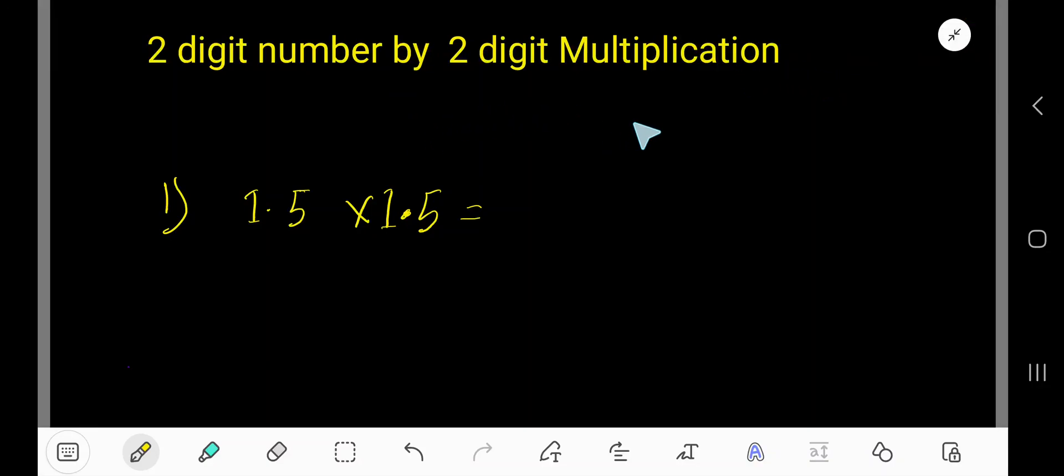Multiply two digit by two digit number with decimals. Here I have taken example 1.5 is a number and 1.5 is another number, that is same number. We will multiply this 1.5 by this 1.5. First ignore this decimal, okay? So if you ignore this decimal you are getting here 15, 15.